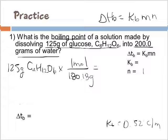So that is 125 divided by 180.18 will give us 0.6937 moles. We're going to divide that by 0.200, because molality is over kilograms, so I have to move my decimal place three places to the left for the water. All right, so that's going to be 0.6937 divided by 0.2, and my m is going to equal 3.47.